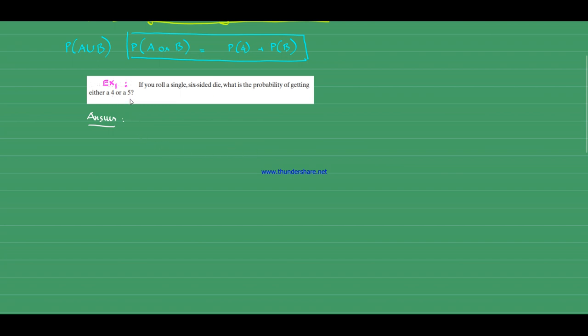So the probability of getting four or five: event A is getting four and event B is getting five. The probability of getting four is 1/6 because there are six faces, and the probability of getting five is also 1/6. So the answer is 2/6, which simplifies to 1/3. None of them are related to each other.